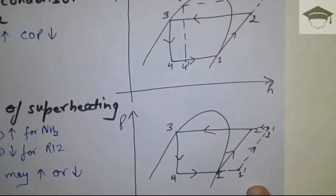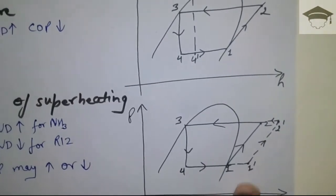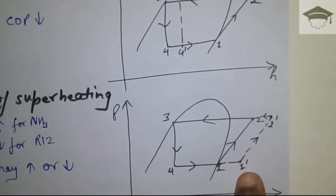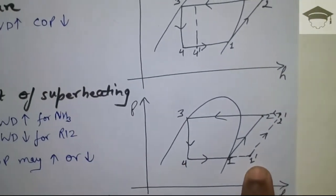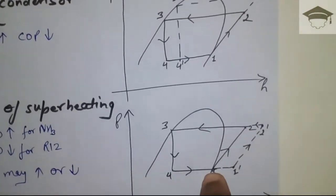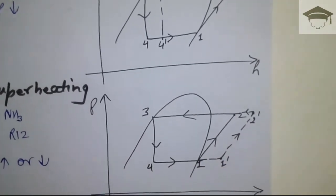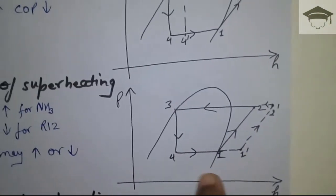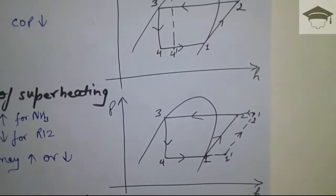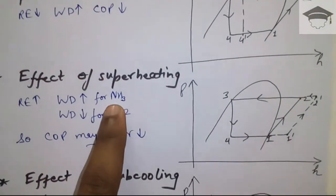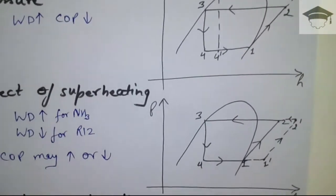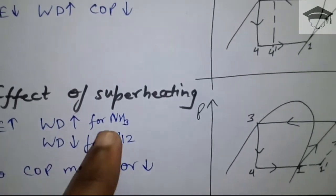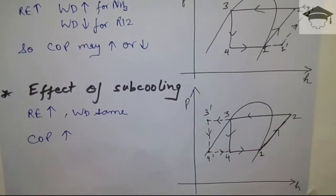Moving on to the third parameter: effect of superheating. Superheating is the increase in enthalpy from point 1 to 1 dash at the same evaporator pressure. The refrigeration effect, which was h1 minus h4, now becomes h1 dash minus h4, so refrigeration effect increases. The work done was h2 minus h1, now h2 dash minus h1 dash. For different refrigerants, COP can increase or decrease — work done increases for NH3 (ammonia), whereas it decreases for R12. So COP will increase for R12 and decrease for ammonia.